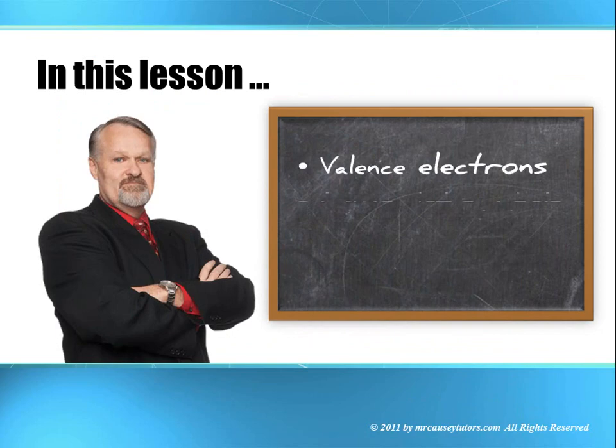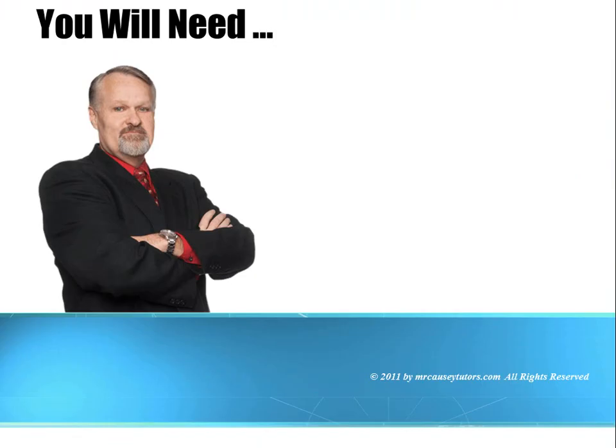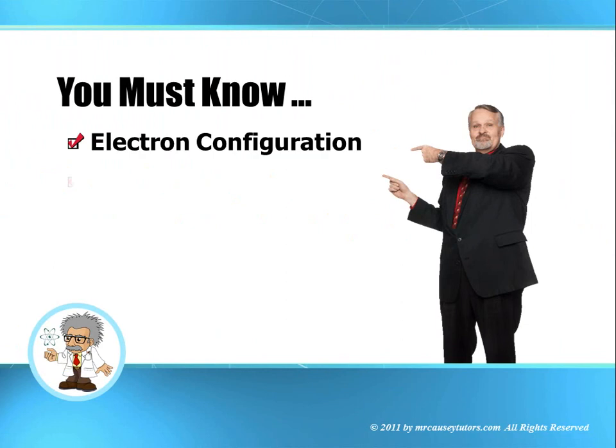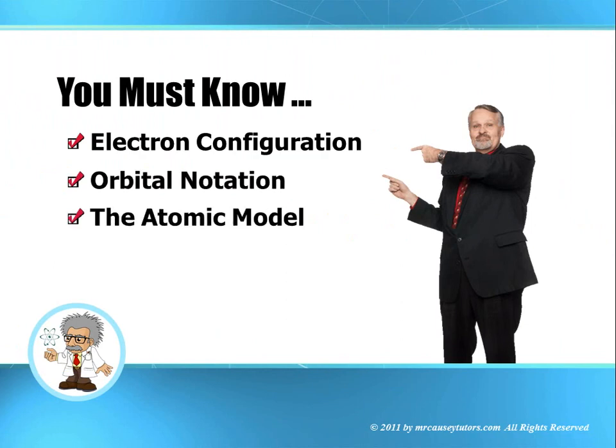In this lesson we will talk about valence electrons and Lewis dot symbols. You will need a periodic table unless you've memorized it. Remember this is your number one tool, so always have a periodic table available. And you must know electron configuration, orbital notation, and the atomic models.